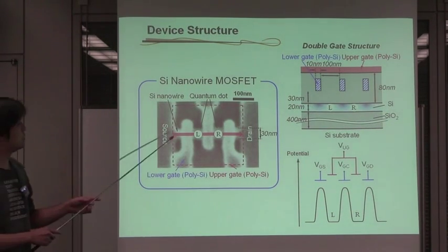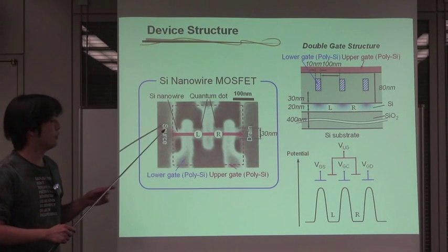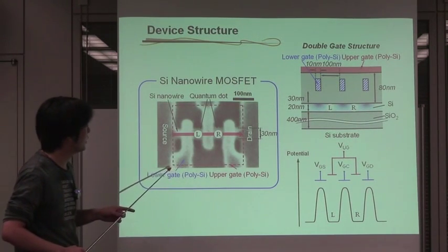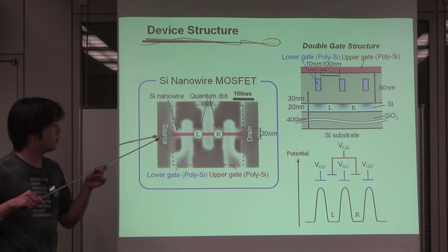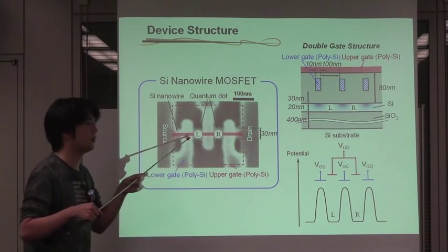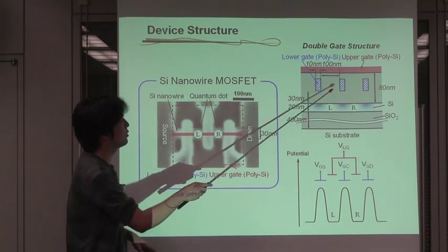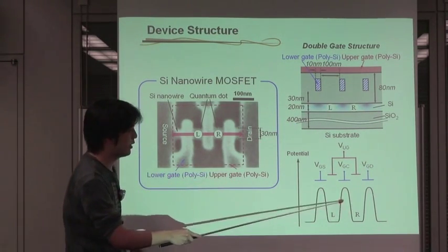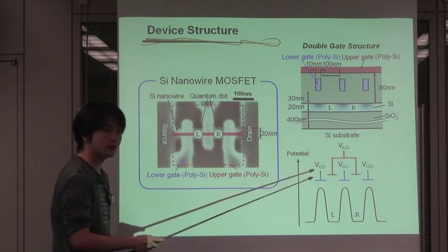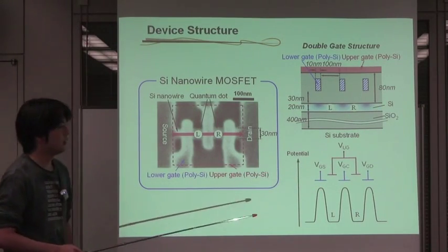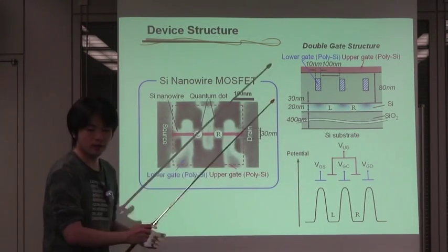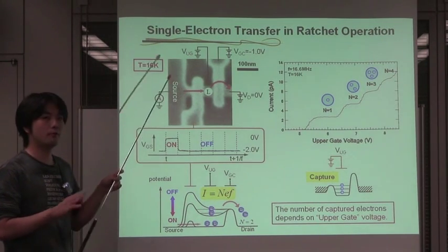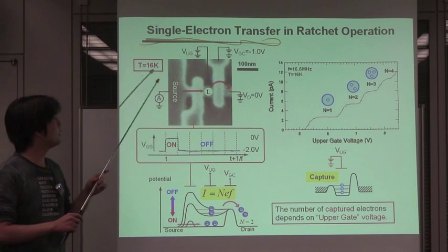We use the triple-gate silicon nanowire MOSFET, fabricated on the silicon on insulator wafer. The three gates are eventually covered with a wide upper gate. Single electrons flow from the source to the drain in this silicon nanowire channel. The three lower gates act as a partition, and in the gap region between the lower gates, the double quantum dots are electrically formed, and their potentials can be controlled mainly by the upper gate. The device parameters are shown here in detail. We focus on the right-side quantum dot, not the double quantum dot. All experiments are performed at 16K.